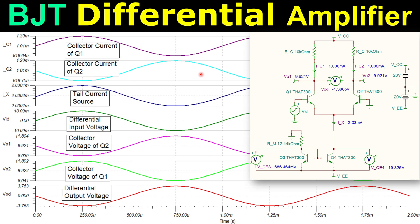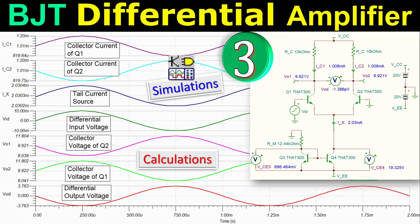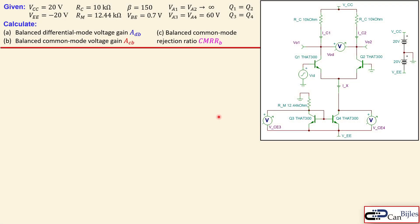Welcome to a new video about BJT differential amplifiers — example number three, where we discuss a circuit using a current mirror as the current source. The circuit has VCC of +20V and VEE of -20V, RC of 10 kΩ each, and resistor RM to set the mirror current. The current mirror is formed by Q3 and Q4; the differential pair by Q1 and Q2. Beta is 150 and VBE is 0.5V for each transistor.